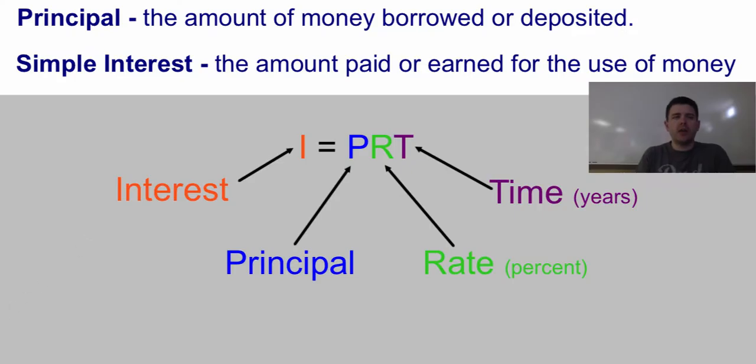Some vocabulary and our basic formula. First is the word principal, we're going to use it as the P in our formula. It's the amount of money borrowed or deposited. Maybe you borrow $5,000 for a loan or deposit $300 into your savings account. That's your principal amount, the amount you put in or borrowed.